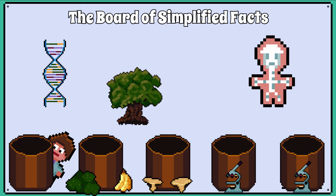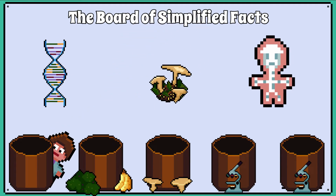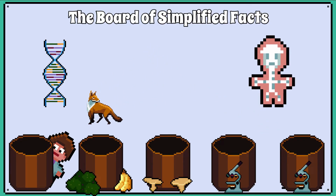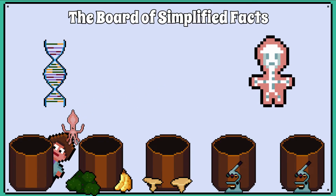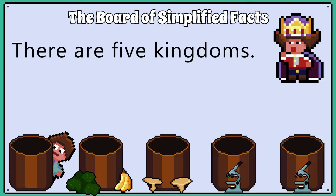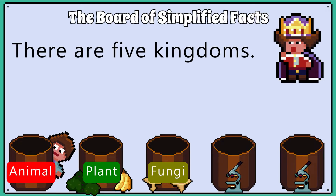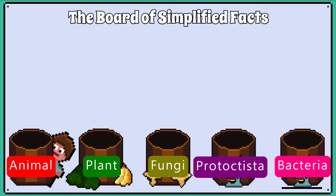Living organisms demonstrate a range of complex features, and using a systematic approach known as taxonomy we can arrange them based on morphological features or by their DNA. All living things belong to one of the five kingdoms, which are the animal, plant, fungi, protocystia — otherwise known as single-celled organisms — and the kingdom of bacteria.